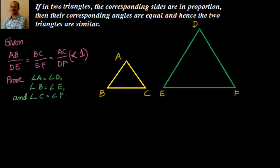Hi, a warm welcome to you. In the last video we have seen AAA similarity criteria. In this video we will see SSS similarity criteria, which means that if the sides are in proportion then automatically the corresponding angles are equal.